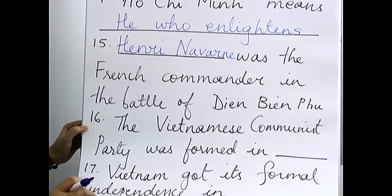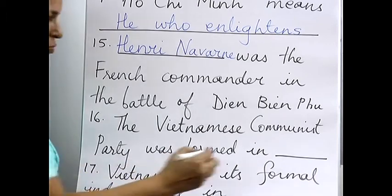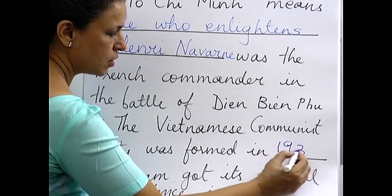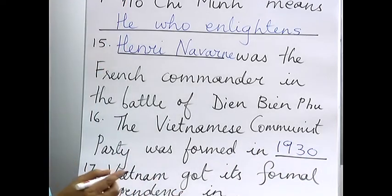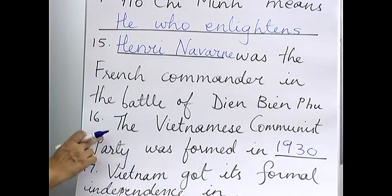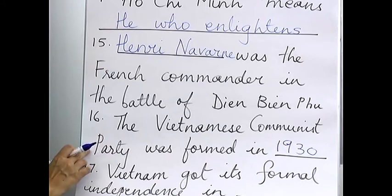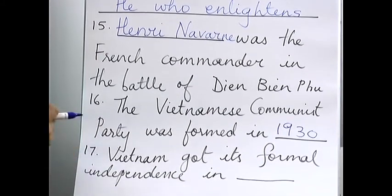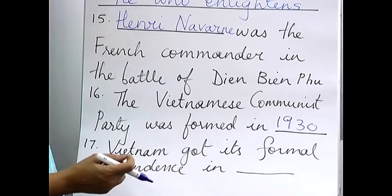Sixteenth: the Vietnamese Communist Party was formed in 1930. When was the Vietnamese Communist Party formed? It was formed in 1930. You can get this as a one-liner as well.